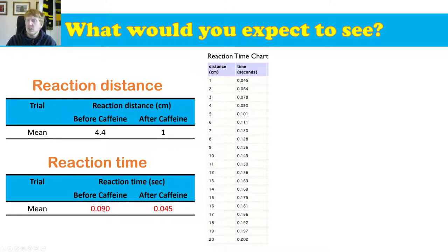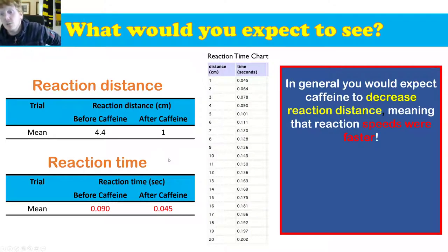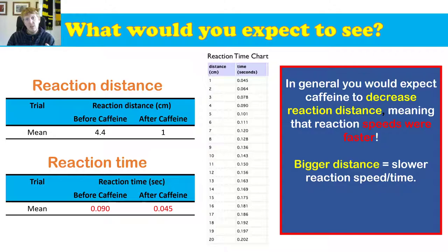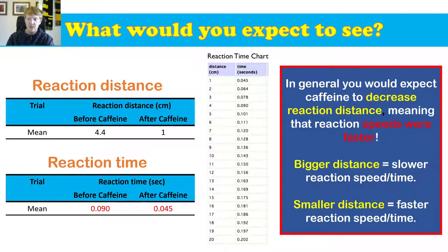You've converted your reaction distance to a reaction time. And you can see before caffeine, reaction time was 0.09 seconds. After caffeine was 0.045 seconds, much faster or higher reaction speed, a lower reaction time. Okay, so here we go. In general, you would expect caffeine to decrease reaction distance, meaning that your reaction speeds were faster, i.e. you caught the ruler sooner. The bigger distance is a slower reaction speed or time in this case, and a smaller distance when you caught them, if it was only one centimeters instead of five, it means you caught the ruler much faster.